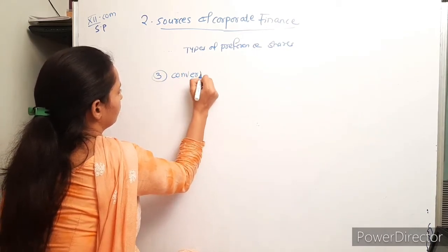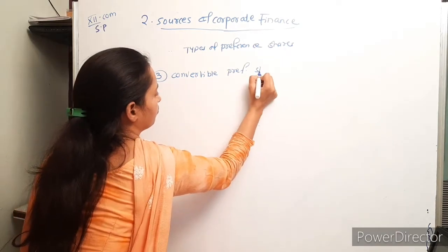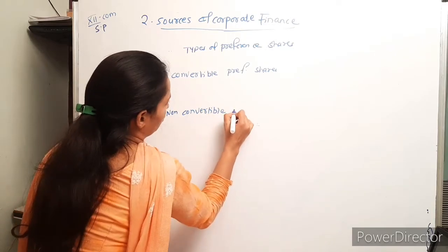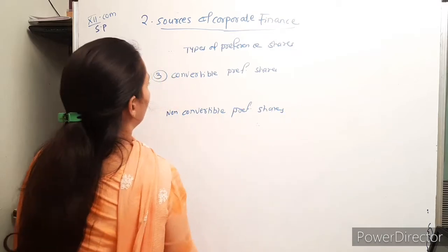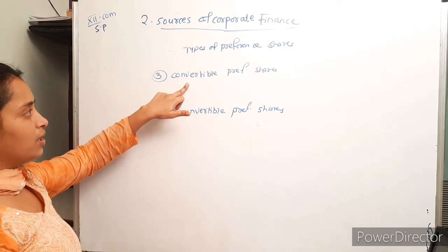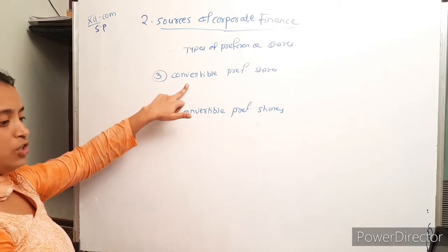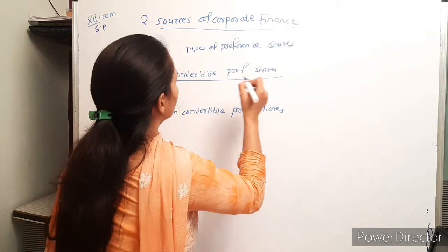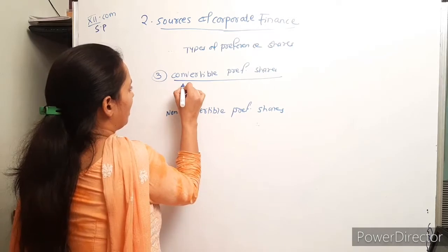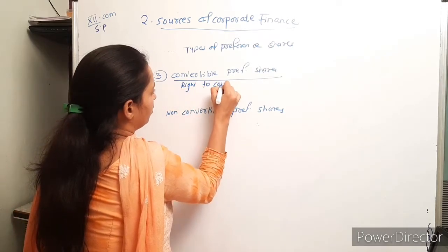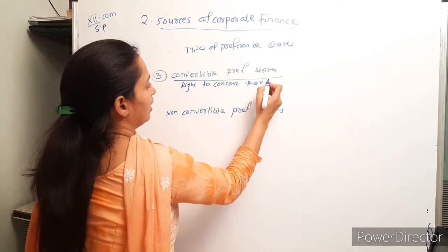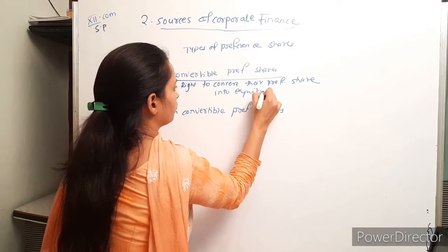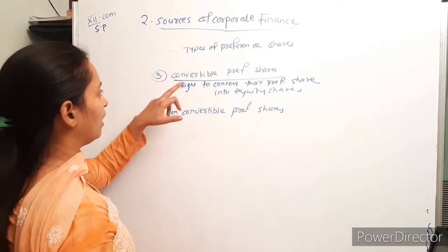The third type is convertible and non-convertible preference shares. Convertible preference shareholders have a right to convert their preference shares into equity shares.